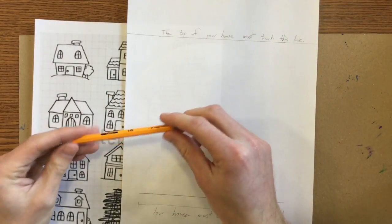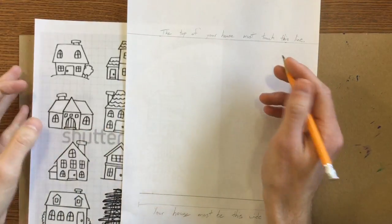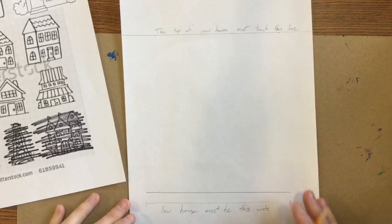It's going to be very hard to do. So some of you might make some houses that are a little too complicated and you're going to have to problem solve and change them. But you're going to be drawing a house on this worksheet.